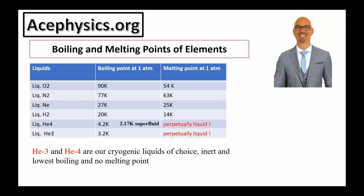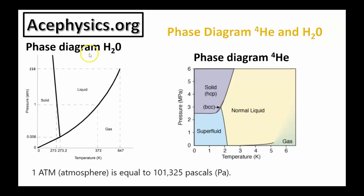This slide explains why helium-3 and helium-4 are our cryogenic liquids of choice. They're inert, they have the lowest boiling points, and no melting points at atmospheric pressure. If you want to cool something down, you use liquid helium — that's the reason scientists use helium in their dilution refrigerators.